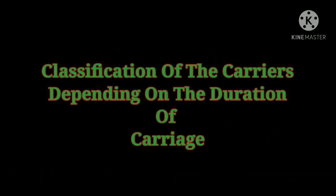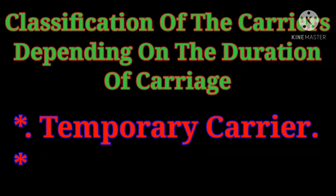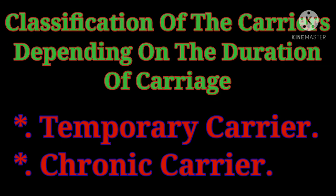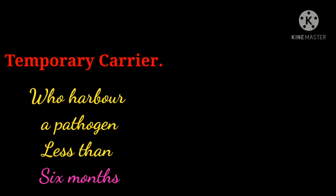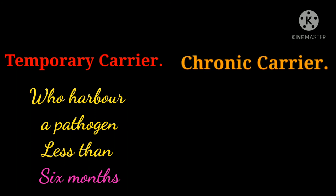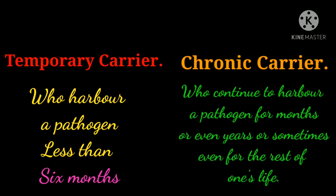Classification of carriers depending on the duration of carriage: carriers are classified as temporary and chronic. Temporary carriers are those who harbor a pathogen for less than six months. Chronic carriers are those who continue to harbor a pathogen for months or even years, or sometimes even for the rest of one's life.